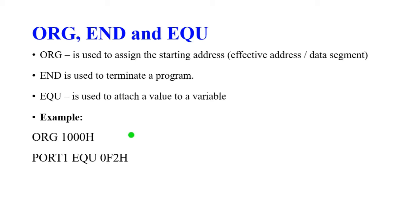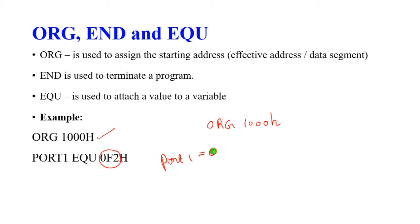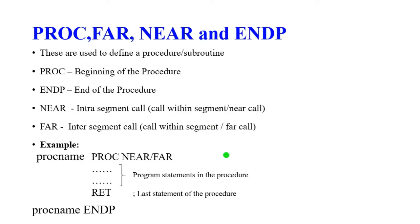ORG specifies the starting address of the data segment or program module. END is used to terminate the program. EQU is used to attach a value to a variable — for example, 'PORT1 EQU 0F2h' means PORT1 is equated to the constant value 0F2h.